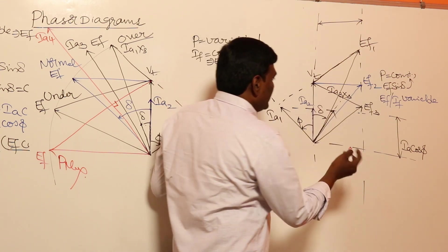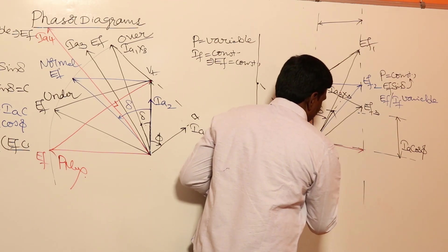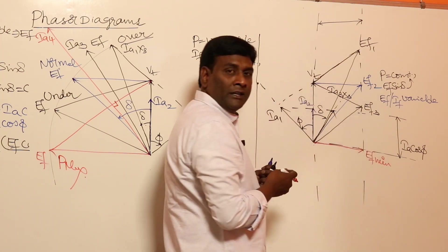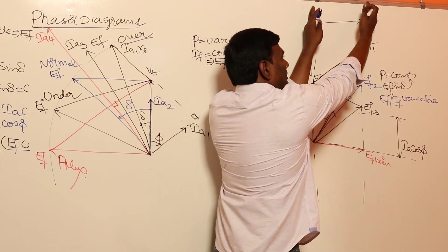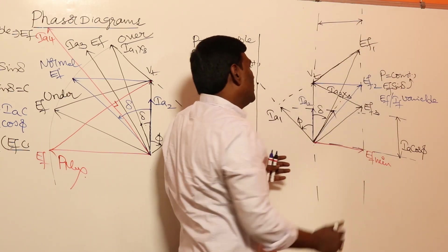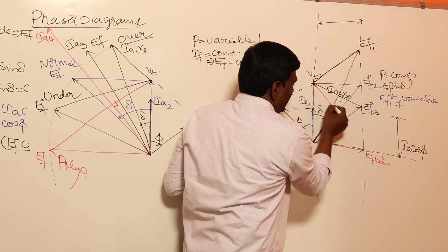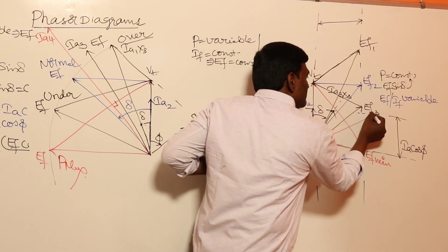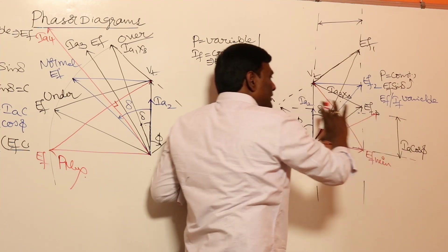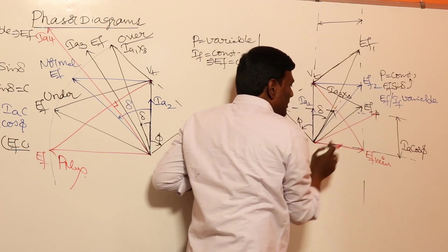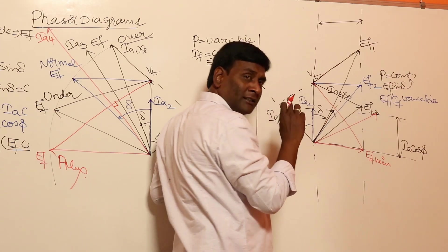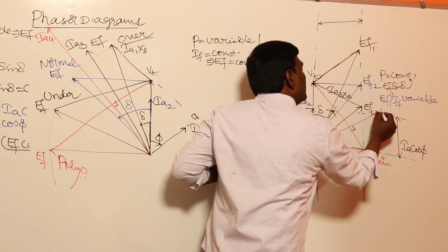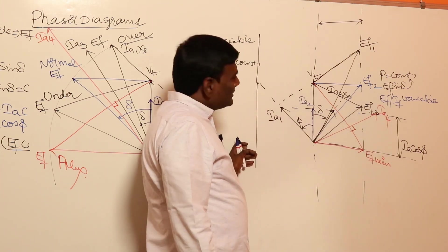At EF minimum in the motor, EF sin delta equals EF minimum. The corresponding Ia axis and Ia4 are found such that Ia cos φ remains the same as before, keeping active power constant across all cases.